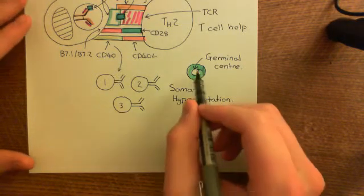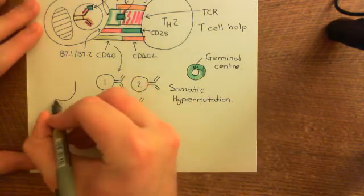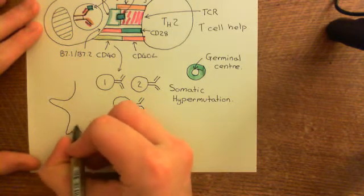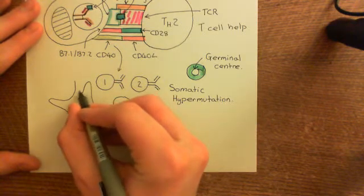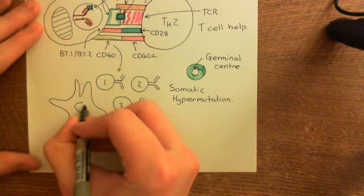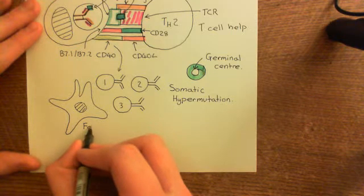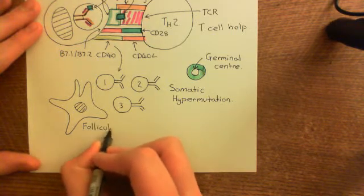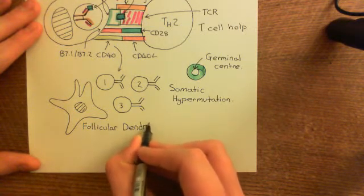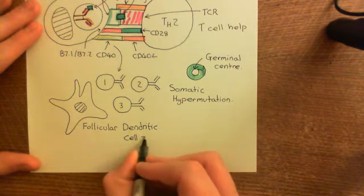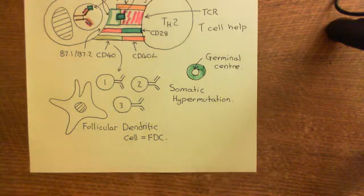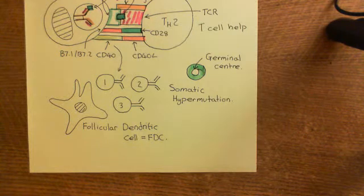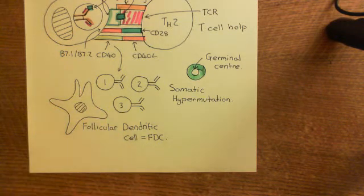Within these B-cell follicles are a type of cell known as a follicular dendritic cell, or FDC, which will play an important role. These have dendrite structures but are completely unrelated to the dendritic cells we saw earlier and unrelated to neurons. Follicular dendritic cells sit in the B-cell follicles, and as lymph percolates through the cortex and paracortex of the lymph node, these FDCs grab onto antigens passing by — so they are coated in antigens.